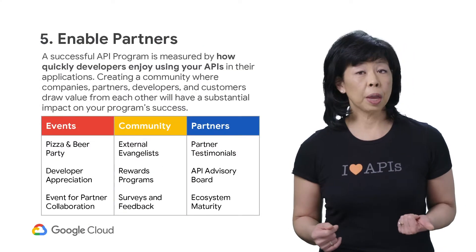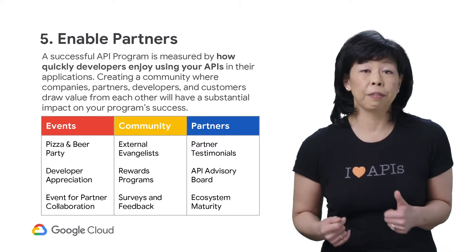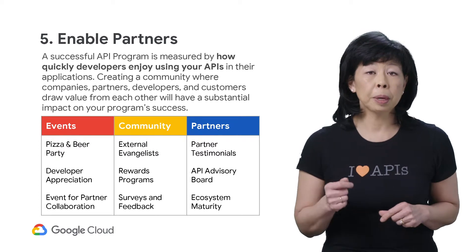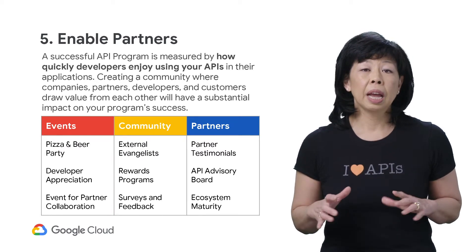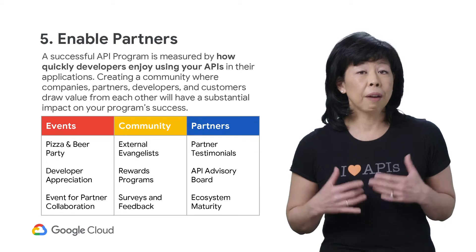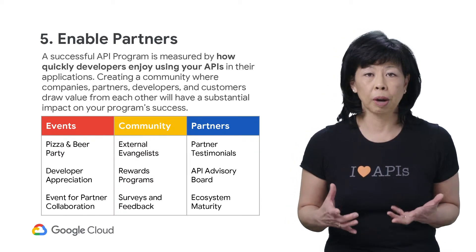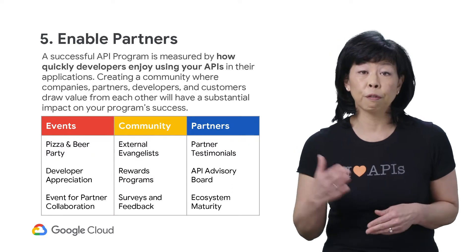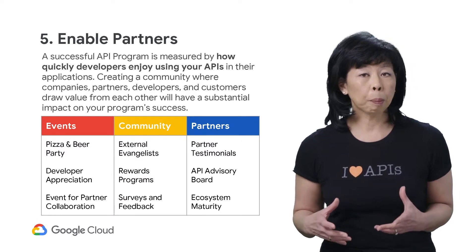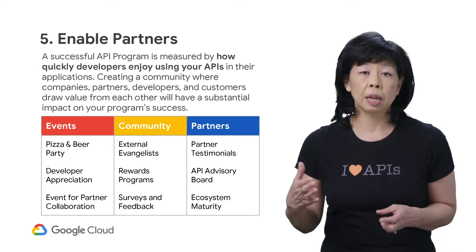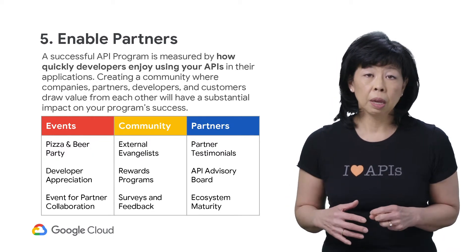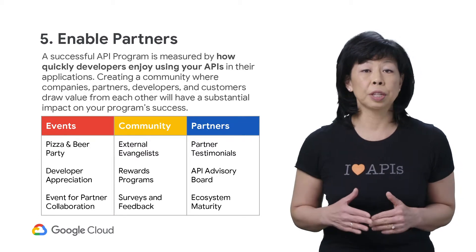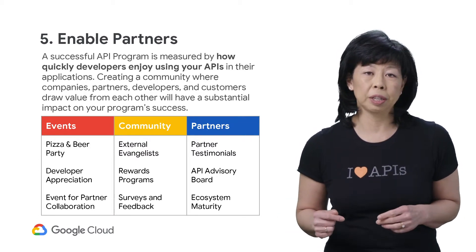A successful API program is ultimately measured by how quickly developers enjoy using your APIs. Creating a community where companies, partners, developers, and even customers find value from each other will have a substantial impact on your program's success. Developing a thriving community is only the first step. By enabling your partners and developers to assist with building your community, expanding your digital ecosystem, and promoting your API program on your behalf, your organization will unlock the full benefits of these adoption strategies.